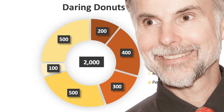In summary, a donut chart is an effective way to compare the different parts that make up the donut, as well as to compare the parts to the total amount. Thanks for your time, and I look forward to discussing another way to visualize data so that you can make your point.